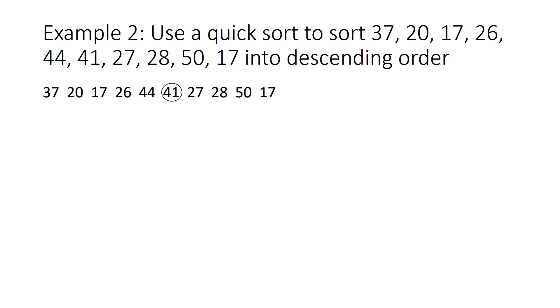So now this time we're writing down all the numbers bigger than 41 first, then 41, then all the numbers smaller because it's descending order. So that's what we've done here and we've shown that 41 has been used as a pivot by the square.